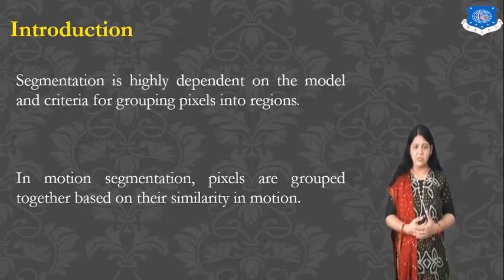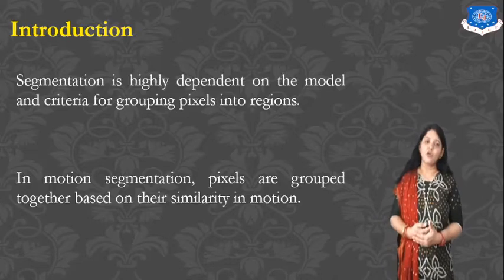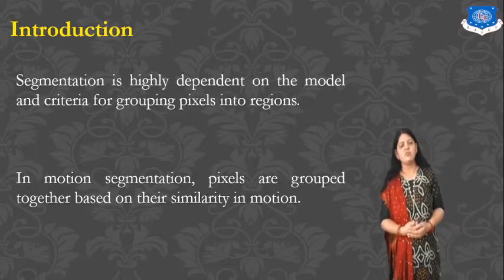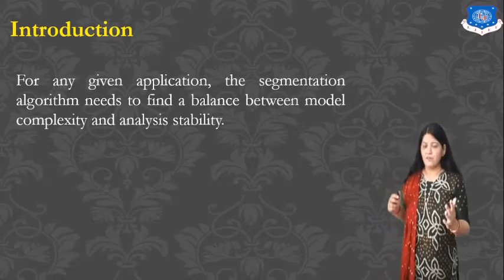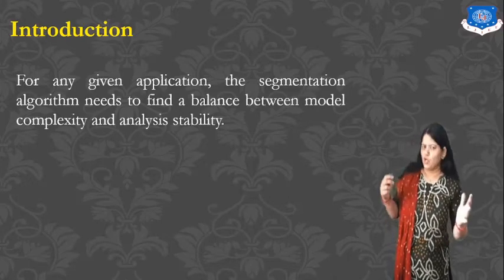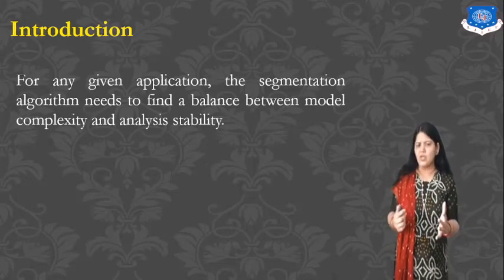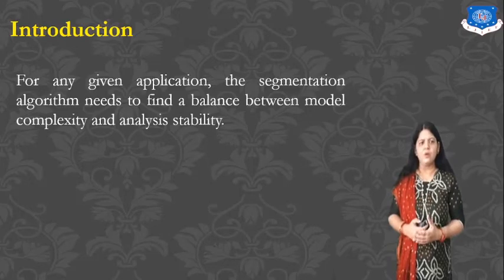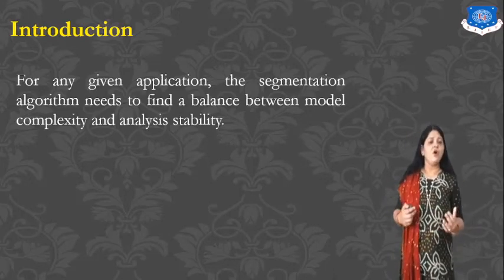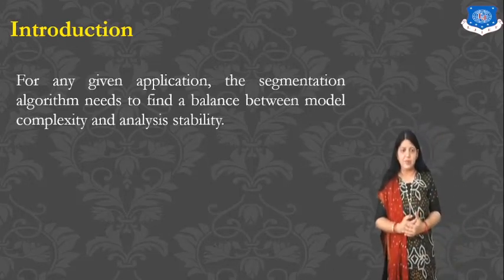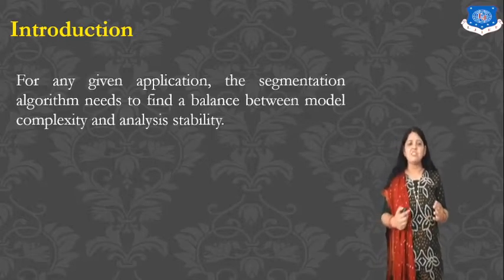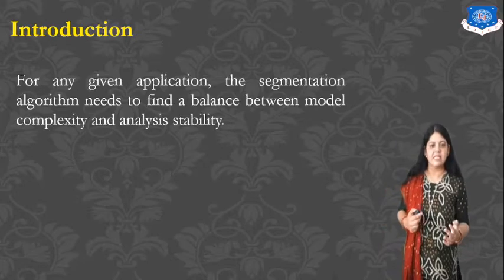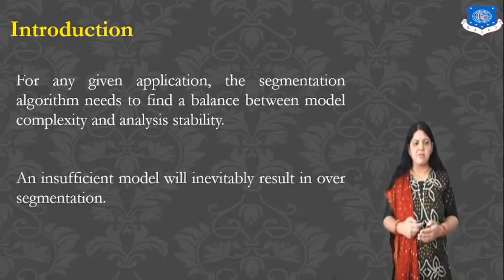In motion segmentation, pixels are grouped together based on similarity in their motions. Where similarity in motions is found, those pixels are grouped together and processed. For any given application, the segmentation algorithm needs to find the balance between model complexity and analysis stability.